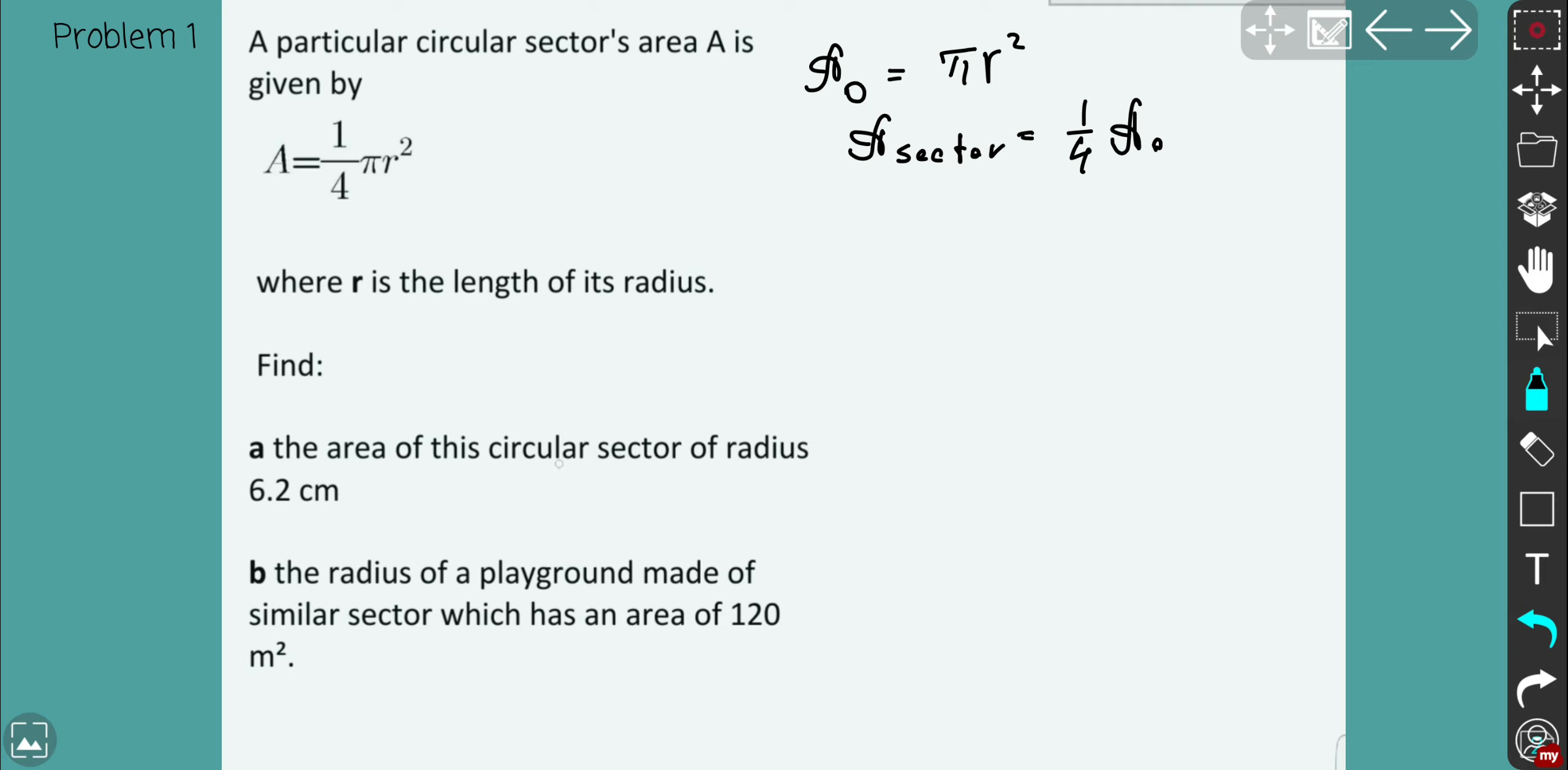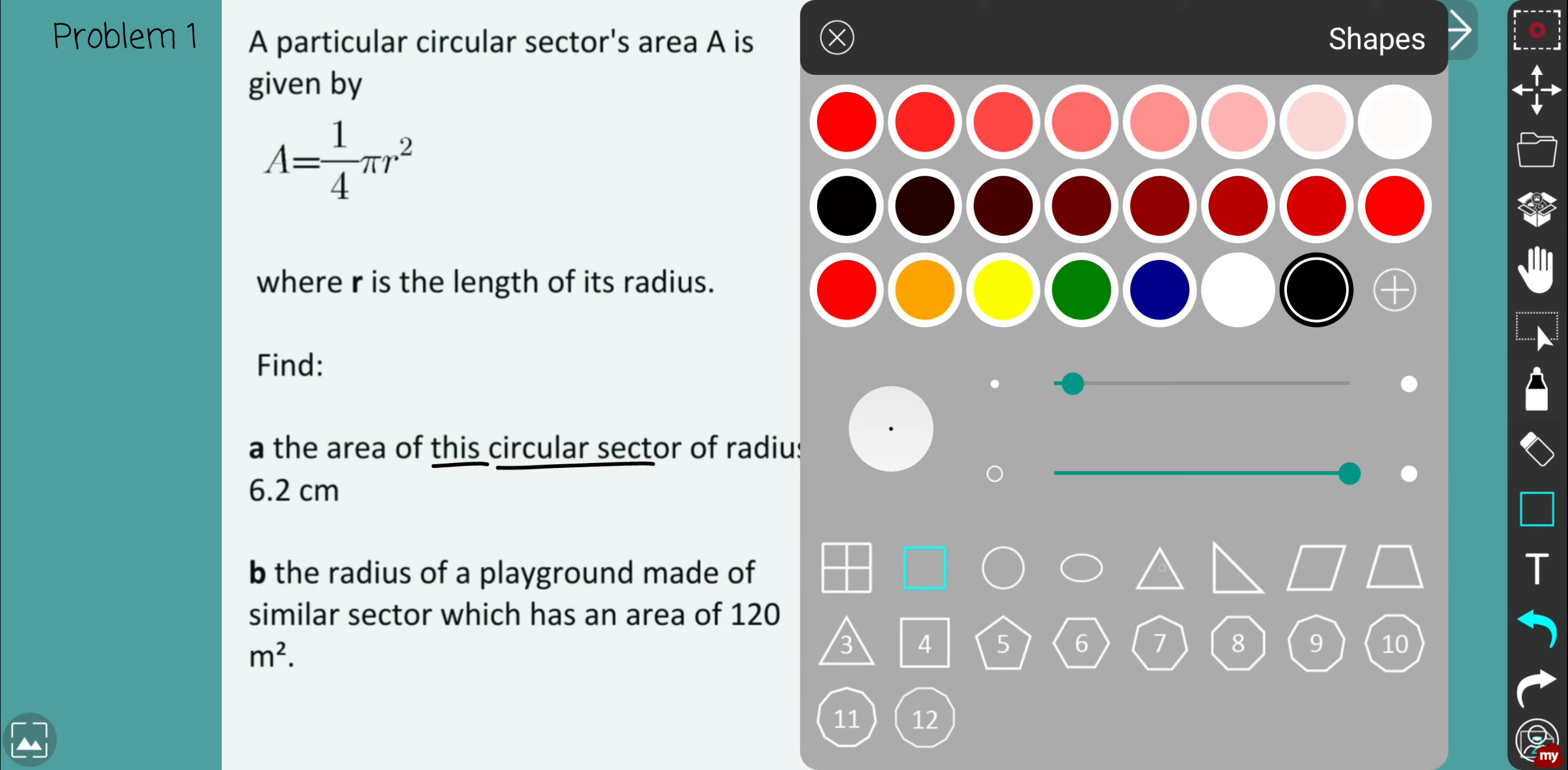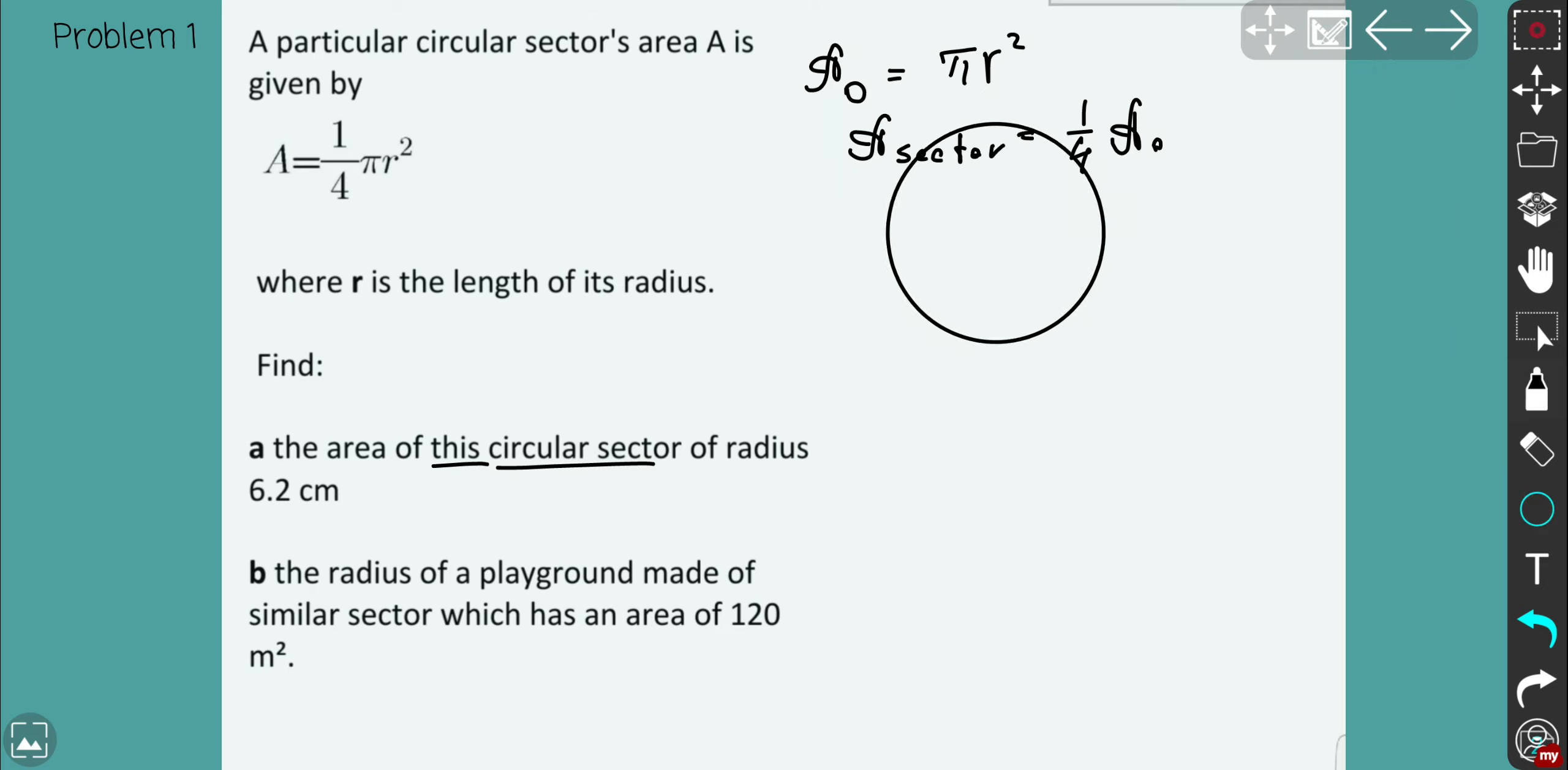But anyway, so you're given the formula. So the area of the circular sector of radius 6.2 centimeters. So particular sector and because you have of this circular sector in question A that means you definitely have this sector basically quarter. So if you set up that as your sector, let's say that's your basically sector circle in this case and you want to have a quarter of that, that's the area of part A. So in this case you just simply need to plug radius 6.2 centimeter into the formula and just calculate. That's straightforward.